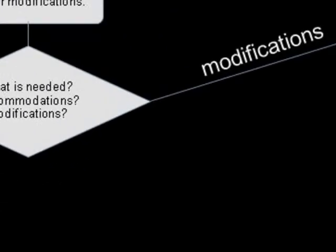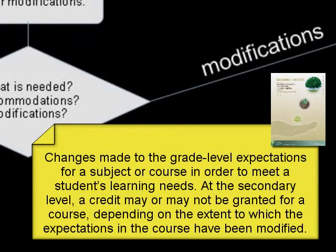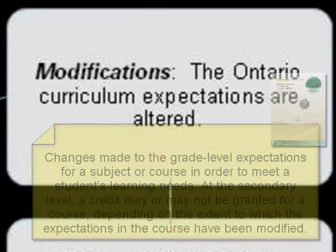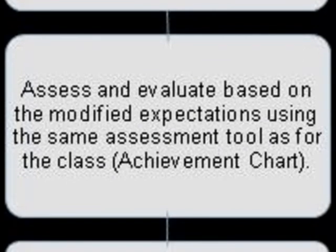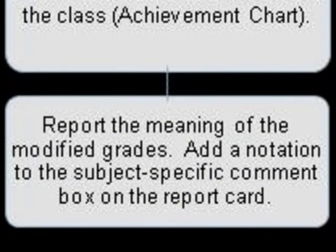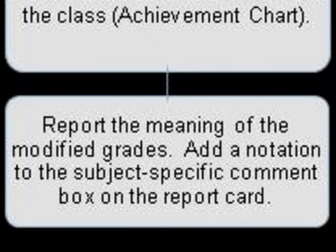It may be determined instead that modifications are necessary for this student. According to Growing Success, modifications involve changes made to the grade-level expectations for a subject. At the secondary level, a credit may or may not be granted for a course, depending on the extent of the changes to curriculum. The key difference here is that the provincial curriculum expectations are altered. We still use the achievement chart as the basis for assessment and evaluation; however, we still need to provide a comment that focuses on what the student has learned, describes their strengths, and identifies next steps for improvement.